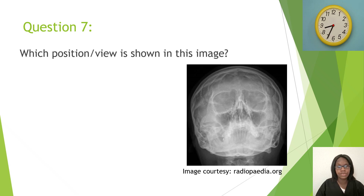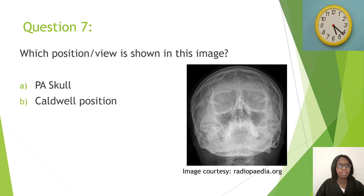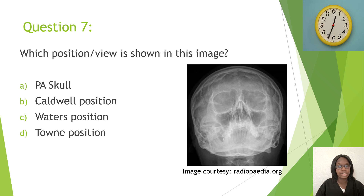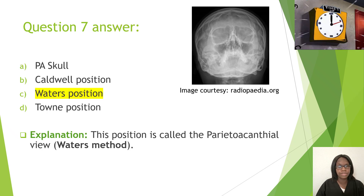Question seven: Which position is the skull viewing shown in this image? A, right lateral; B, Caldwell position; C, Waters position; D, Towne position. The correct answer is C, Waters position. This position is also called the parietal acanthial view, also known as the Waters method. Make sure you know both names for this position.